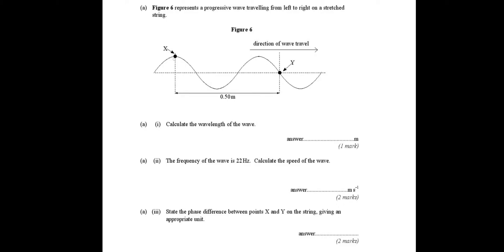So as you can see, if I start at point X and trace this wave out, that would be one full wave, and that would be one and a quarter waves. So for one and a quarter waves we know that the distance is 0.5 meters. So if we do 0.50 meters divided by 1.25 waves, we get a wavelength of 0.4 meters.